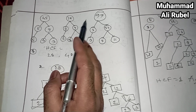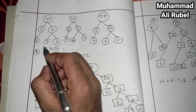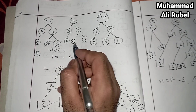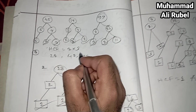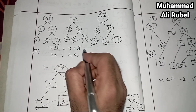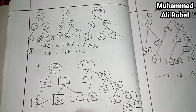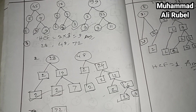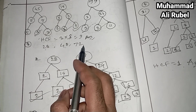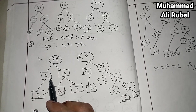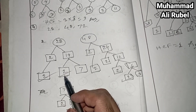Now we find the HCF of those numbers. The common factors are 3 and 3, so 3 times 3 equals 9. The HCF is 9.